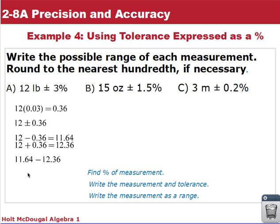In doing that, 12 minus 0.36 gives us 11.64. 12 plus 0.36 is 12.36. So our range is expressed as a range from 11.64 to 12.36.